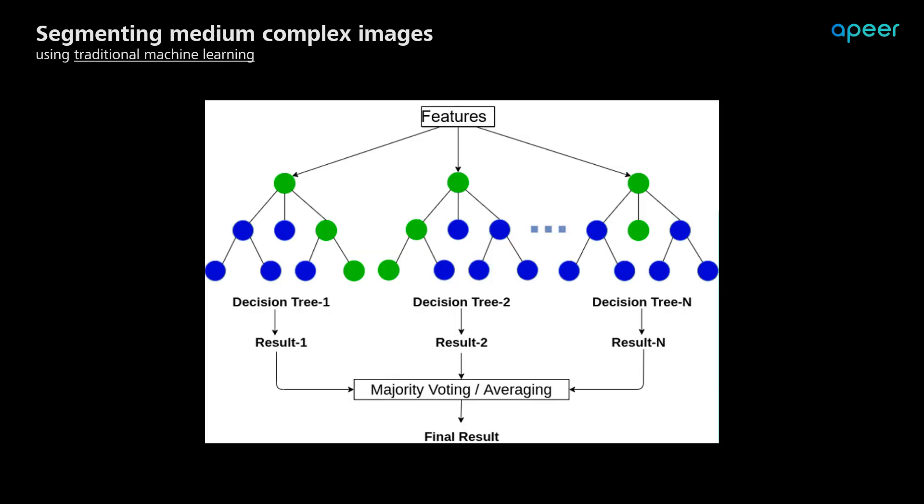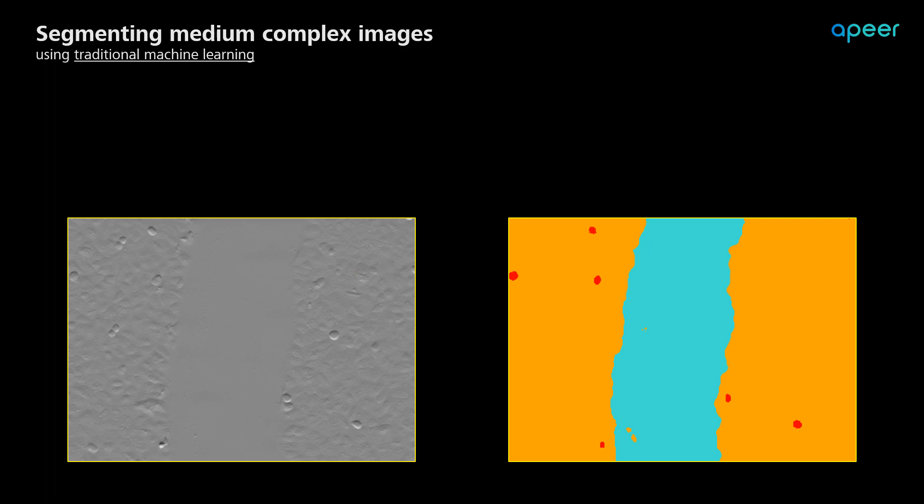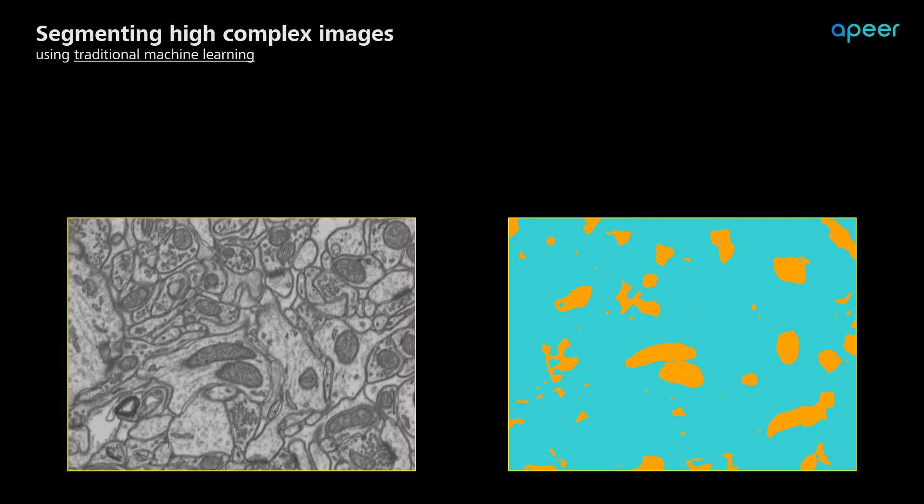Random forest is a traditional machine learning approach that's based on decision trees. In this example, we extracted features that represent texture from both the smooth and the textured regions, and used random forest to segment the pixels. You may find this approach to be appropriate for many use cases. But when you apply the exact same approach to extract mitochondria from these complex images, the result is not satisfactory. This is where deep learning has been proven to be very efficient.